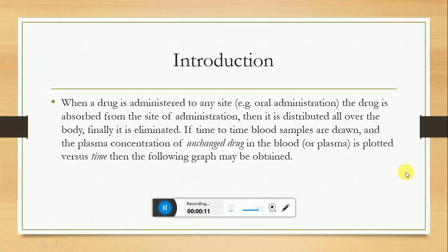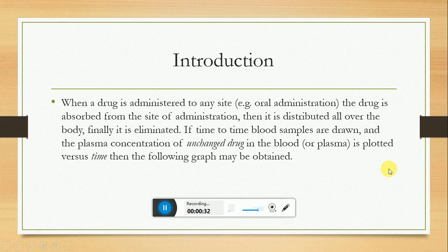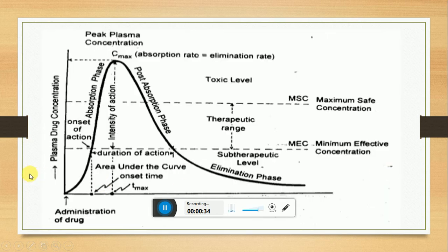What is plasma concentration time profile curve? When a drug is administered to any site, the drug is absorbed from the site of administration, then it is distributed all over the body, and finally it is eliminated. If time-to-time blood samples are drawn and plasma concentration of unchanged drug in the blood is plotted versus time, then the following type of curve is obtained, which is called as plasma concentration time profile curve.